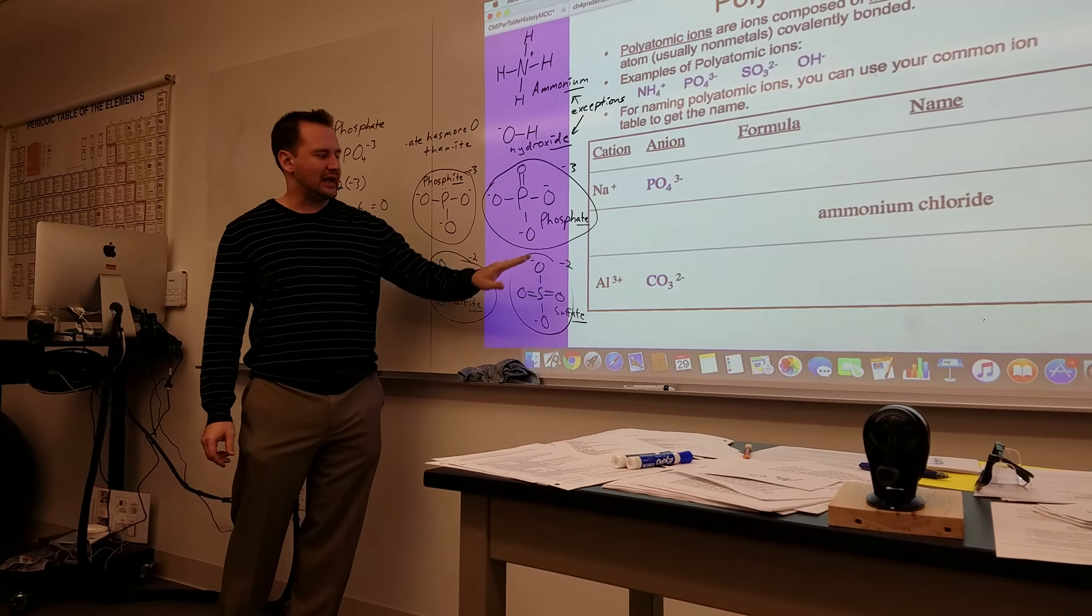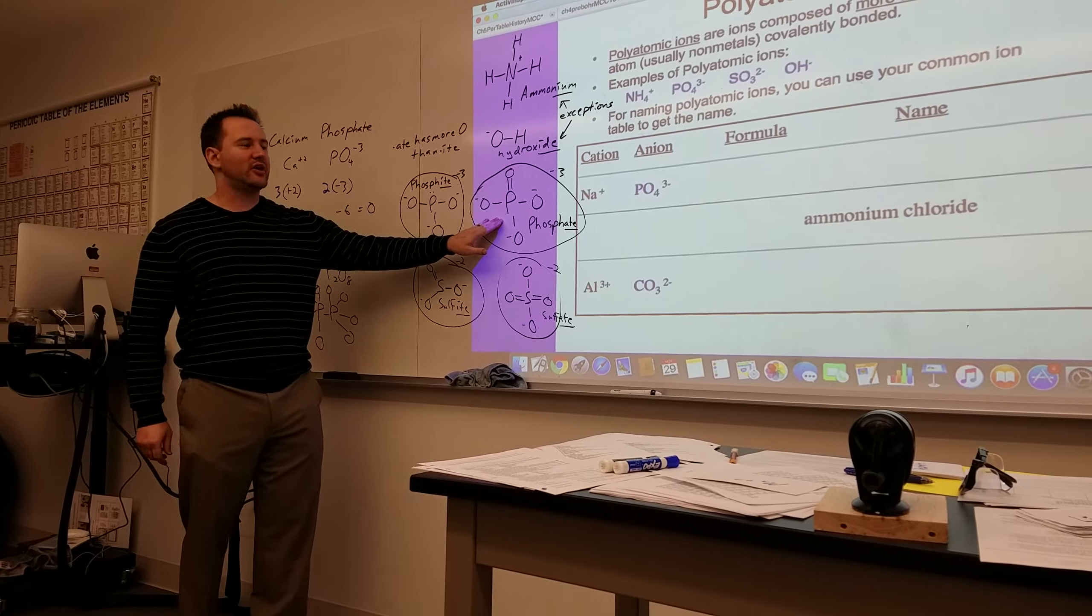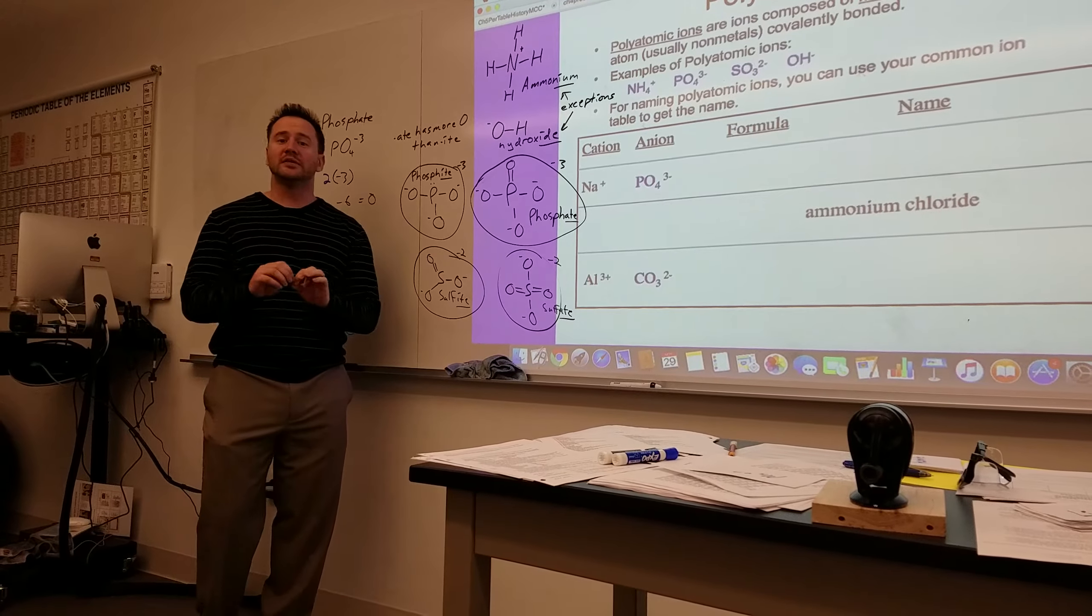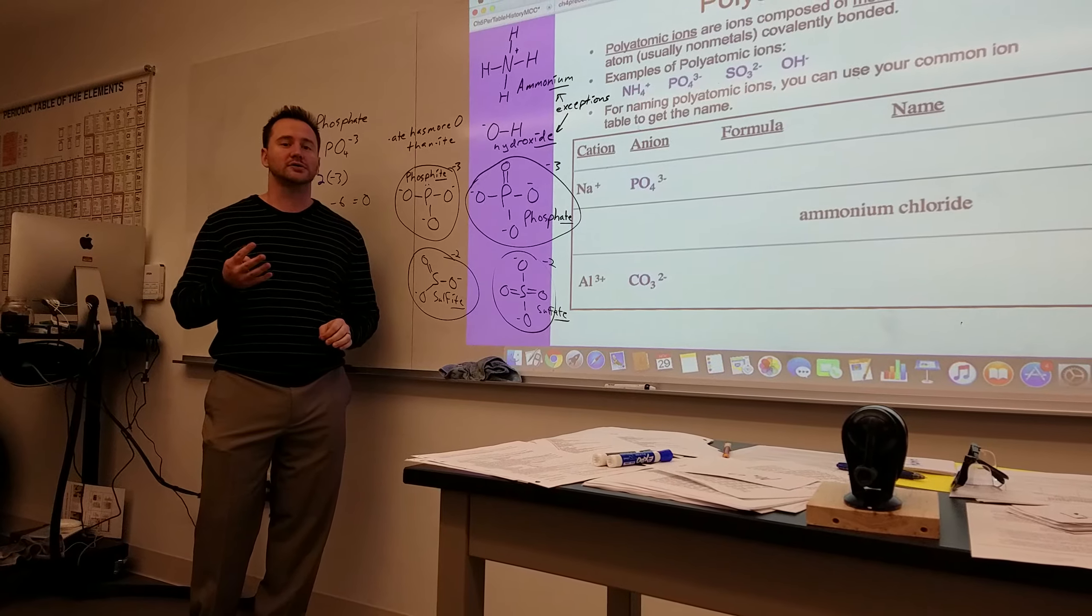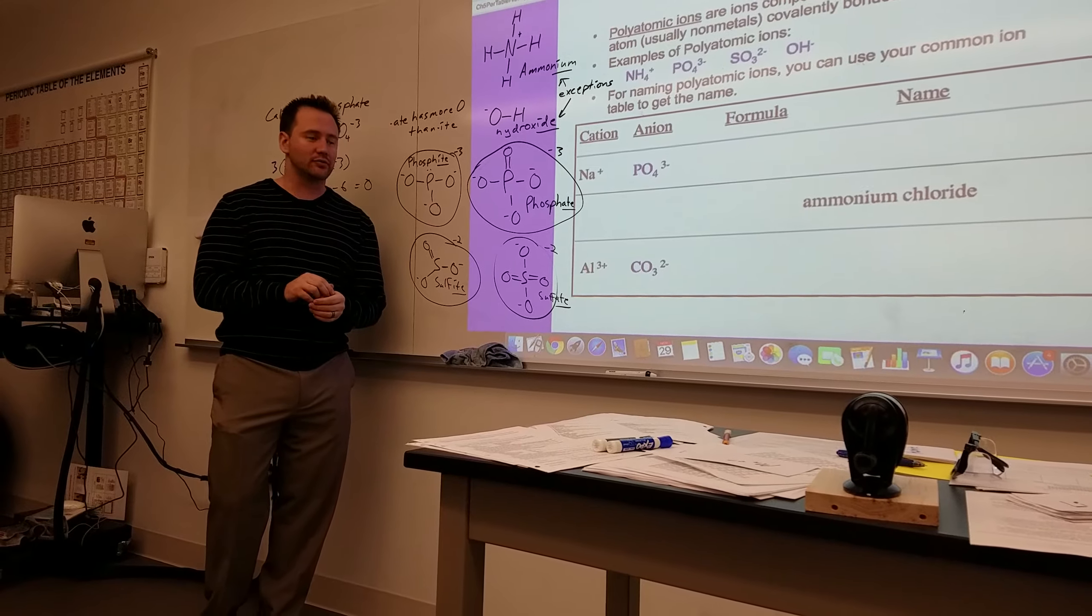Usually they end in ate or ite. This is an example of phosphate. Phosphate has one phosphorus atom that's covalently linked to four oxygen atoms, of which three are negative. So it has an overall ionic charge of negative three.